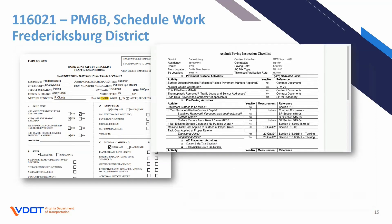Another good example of schedule work in the Fredericksburg district: they are using the work zone safety checklist very effectively within the tool. For every day of work, they're filling out one of these work zone safety checklists within PlanGrid. They're also using the asphalt paving inspection checklist within the system to track what's going on and make sure they're not missing anything. Both of those forms come standard on all projects as mentioned.